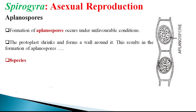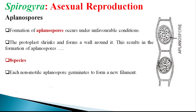As per literature, eight species among the 300 known species of Spirogyra have been recorded for planospore formation, though recent phycological research suggests this figure may have changed. Each planospore, when examined in detail, is non-motile in nature. Once they germinate under favorable conditions, they produce a new filament.